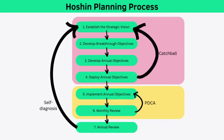Step five is to implement your annual objectives. This is where the rubber hits the road and execution begins. You know what you need to do and how it fits into the strategy — now you determine the specifics and get started. You use the PDCA cycle during this step and the next to drive continuous improvement. Step six is your monthly review, which aims to ensure that your projects and initiatives are on track, allowing you to see what's going right and what isn't, and decide on corrective action. Your key goal as a manager is to ensure that systems are in place to understand your progress towards your goals.